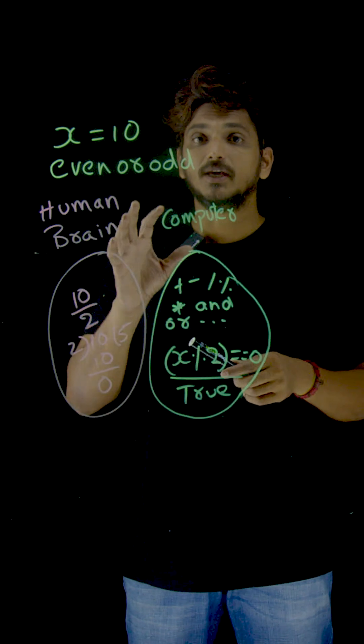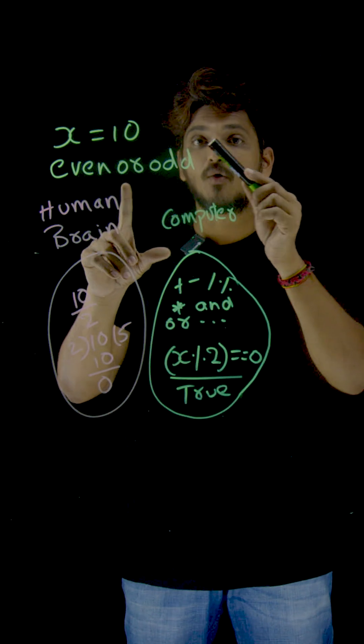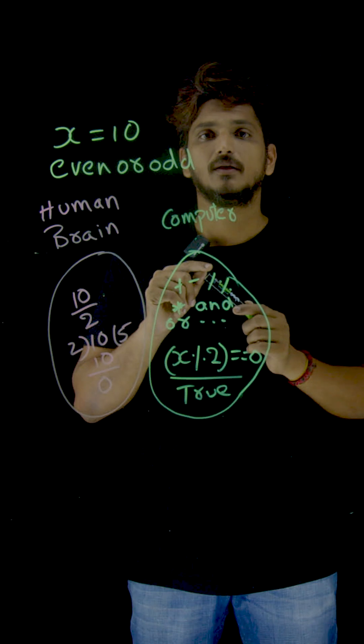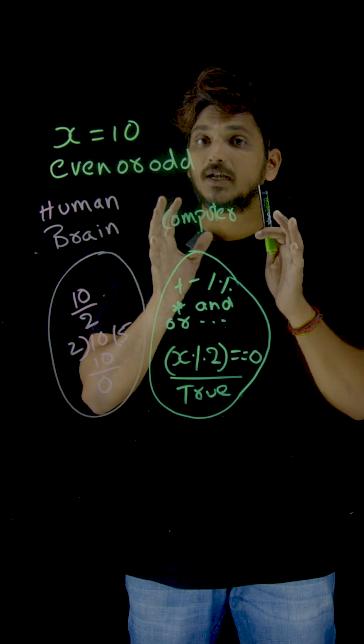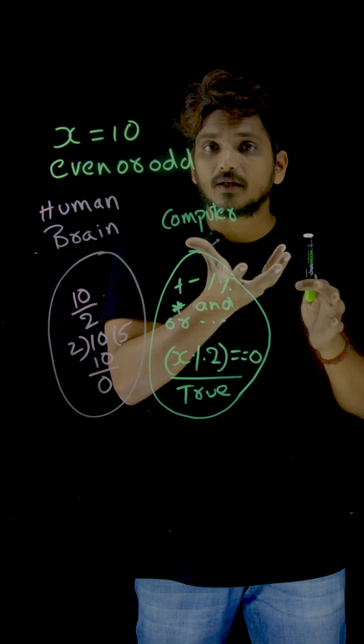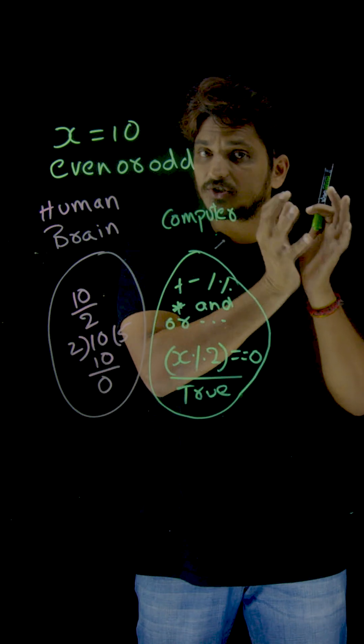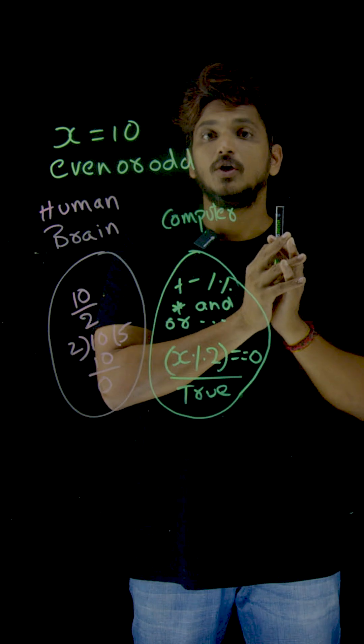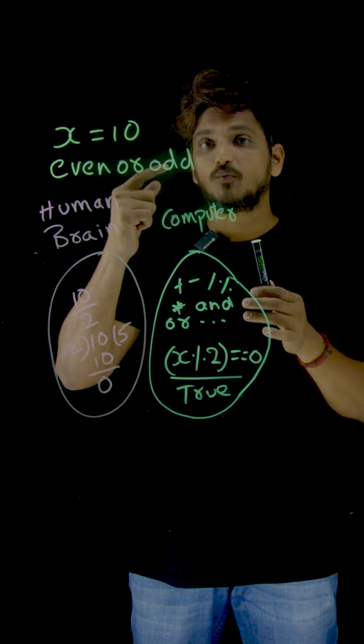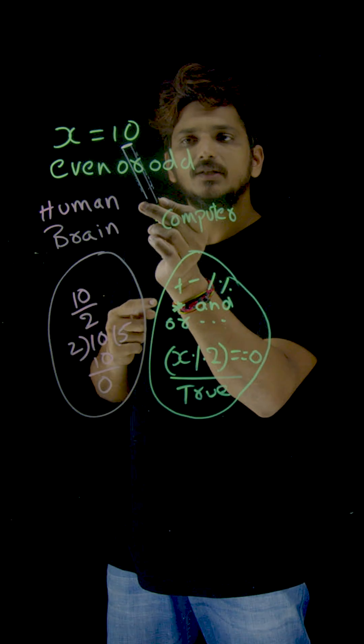See here, computers don't have eyes to see the number. Computers understand the operators - whatever operators we discussed previously, computers understand those operators. So now try to understand what happens inside your brain by looking at this.